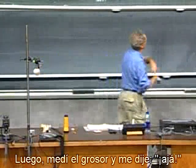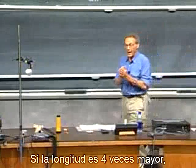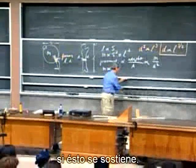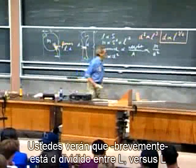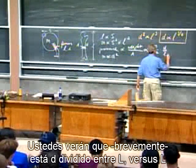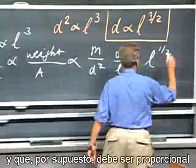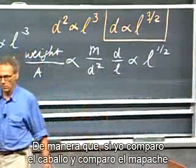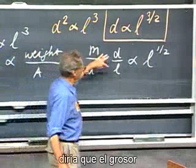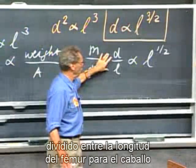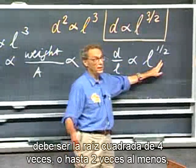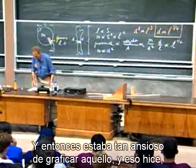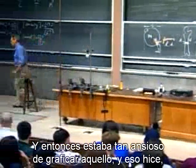Then I measured the thickness. If the length is four times higher, then the thickness has to be eight times higher if this scaling law holds. What I'm going to plot is D divided by L versus L, and that must be proportional to L to the power one-half. So comparing the horse and the raccoon, the thickness divided by the length of the femur for the horse must be the square root of four — twice as much as that of the raccoon. I was very anxious to plot that, and I did.